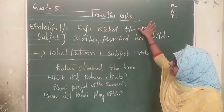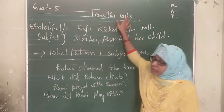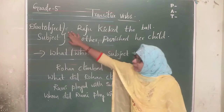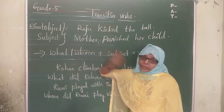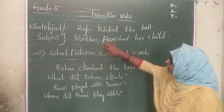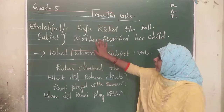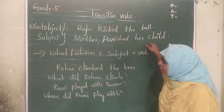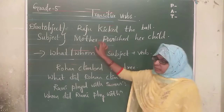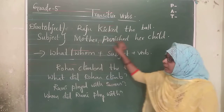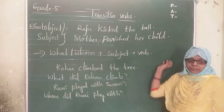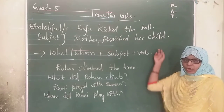So these transitive verbs — what do they contain? They contain a subject and a direct object. Look at this example: Mother punished her child. Mother is the subject here, and the child is the direct object.